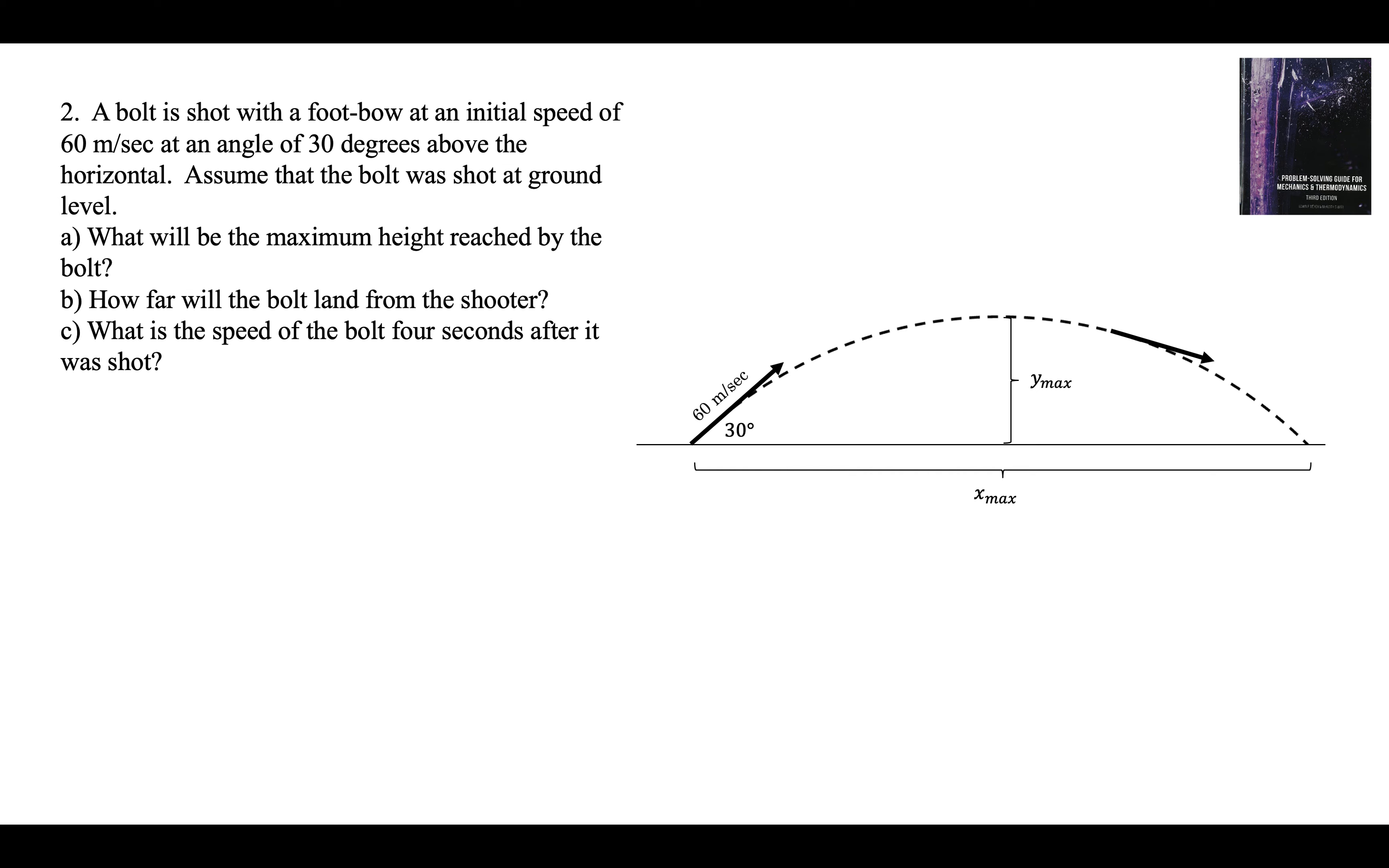What is the speed of the bolt 4 seconds after it was shot? It starts off at 30 upward. It's going to be going 10 meters per second downward after 4 seconds. We have to subtract 10 meters per second each second. If we do that for 4 seconds, it's going to be down to minus 10. So the vertical component of this speed vector, this velocity vector, is 10 meters per second down.